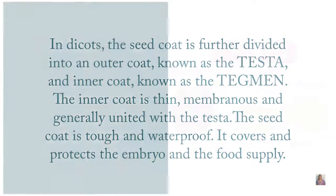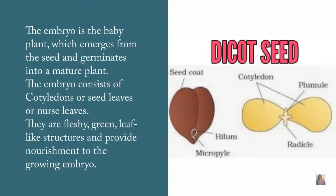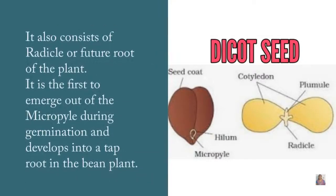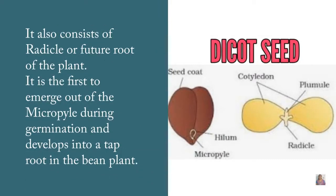The embryo is the baby plant which emerges from the seed and germinates into a mature plant. The embryo consists of cotyledons, also called seed leaves or nurse leaves. They are fleshy, green, leaf-like structures that provide nourishment to the growing embryo.